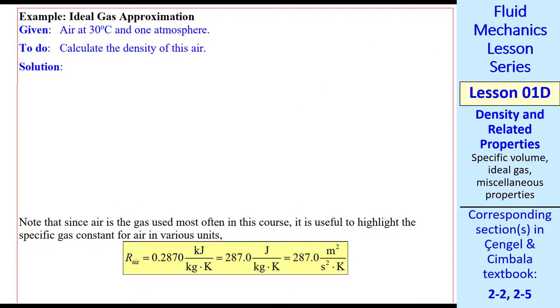Let's do an example. Suppose we have air at 30 degrees C and 1 atmosphere pressure. Let's calculate the density of this air. First, I calculate the specific gas constant, the universal gas constant, divided by the molecular weight of the air.